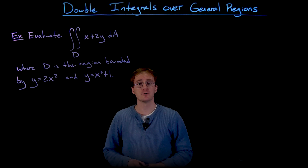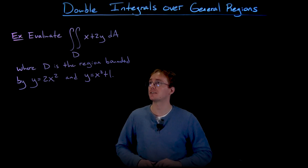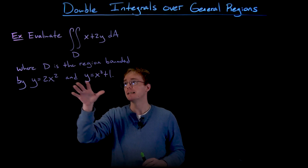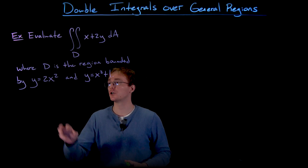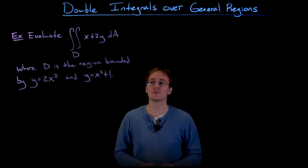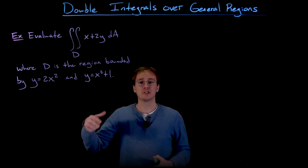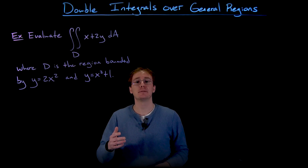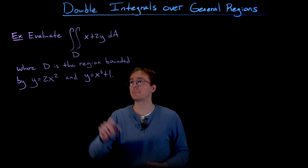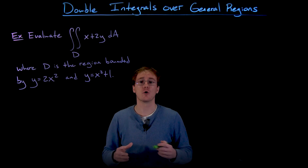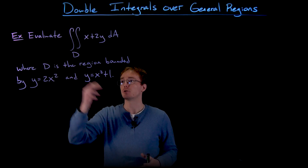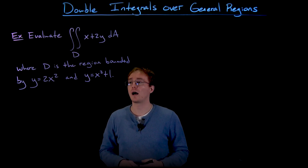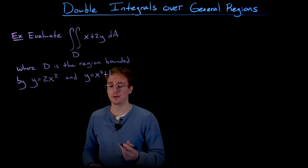Let's look at an example: evaluate the double integral over region d of x plus 2y, where d is the region bounded between y equals 2x squared and y equals x squared plus 1. Since the curves are described as functions of x, this is most likely a type 1 region. We always need to draw a picture of the region when setting up these double integrals.